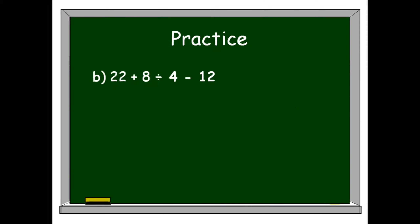Letter B: 22 plus 8 divided by 4 minus 2. First, let's examine the expression. This expression has addition, division, and subtraction. Therefore we're going to use PEMDAS. Since there are no parenthesis, exponent, or multiplication, we can proceed with division. 8 divided by 4 gives us 2.